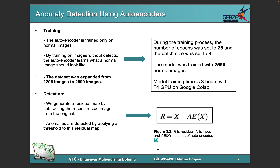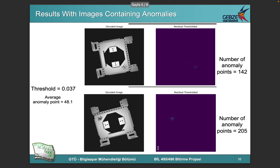we generate a residual map by subtracting the reconstructed image from the original one. Then anomalies are detected by applying a threshold to this residual map.